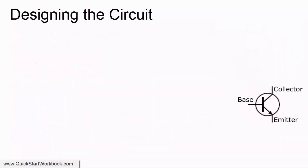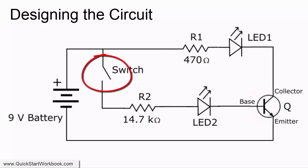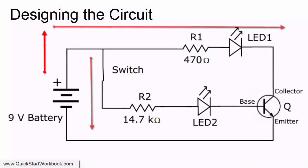In order to allow current to flow to the base, the switch needs to be closed. When this happens, the transistor is switched on and current can flow around the circuit.